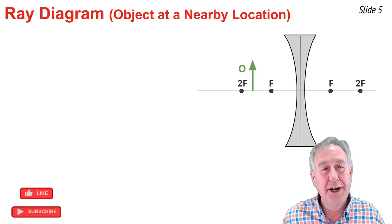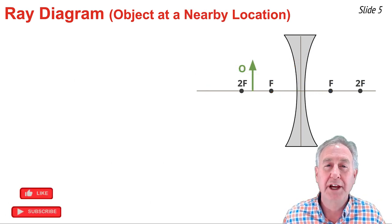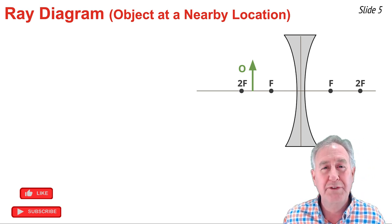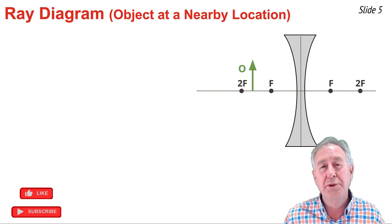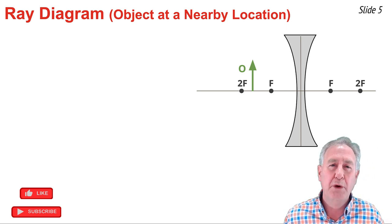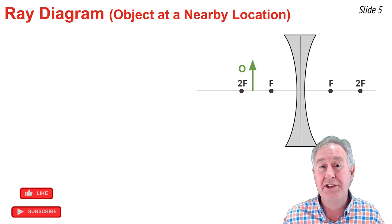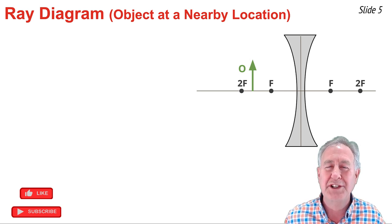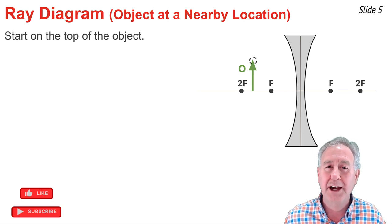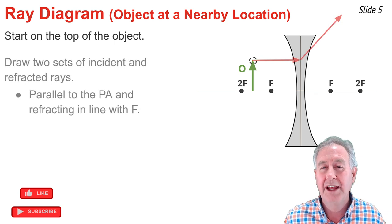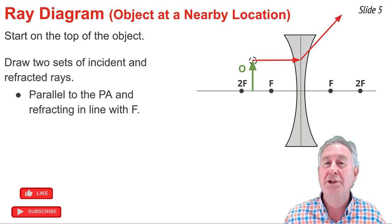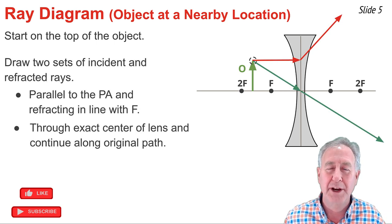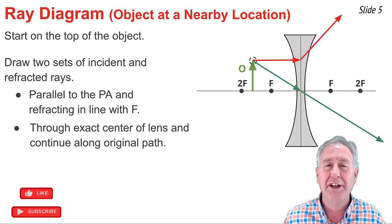Now I'm going to construct a ray diagram for an object placed considerably closer to the diverging lens. This will serve as a second practice problem and also test whether the distance from the object to the lens affects the ray diagram or image characteristics. I begin by picking a point on the top of the object and constructing two sets of incident and refracted rays, and I can also draw a third set.